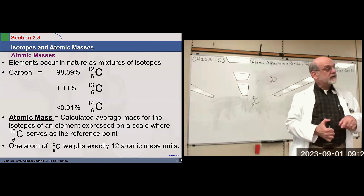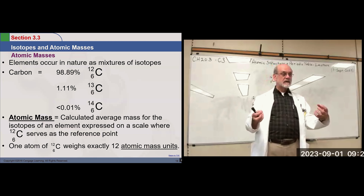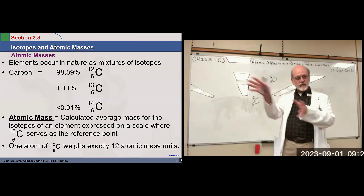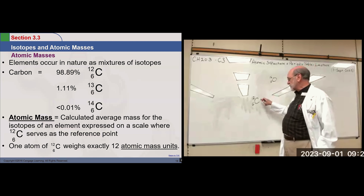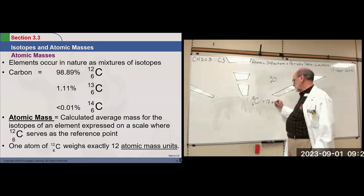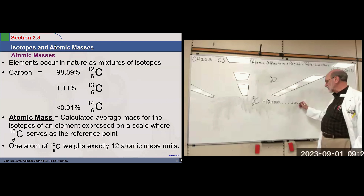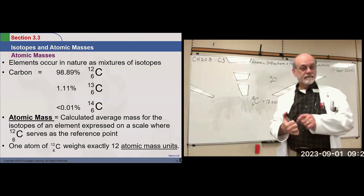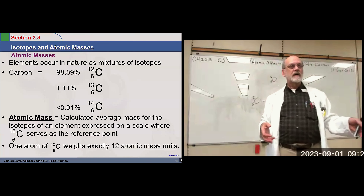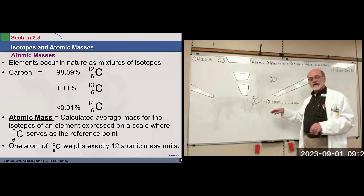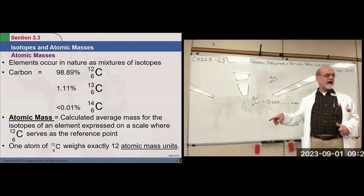One reason carbon-12 is the standard is it's very easy to obtain — all you need is some organic material, ash it, separate the carbon, and run it through your mass spectrometer to separate the isotopes. Carbon-12 is set at exactly 12 atomic mass units. Everything else is compared to that, so none of the other isotopes are going to have an atomic mass that is a whole number — they'll all be decimal fractions.